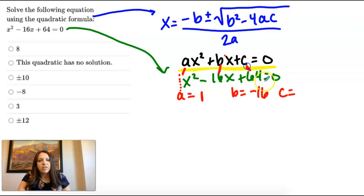And c is for the constant, it's the number without a variable. And so this would be positive 64.